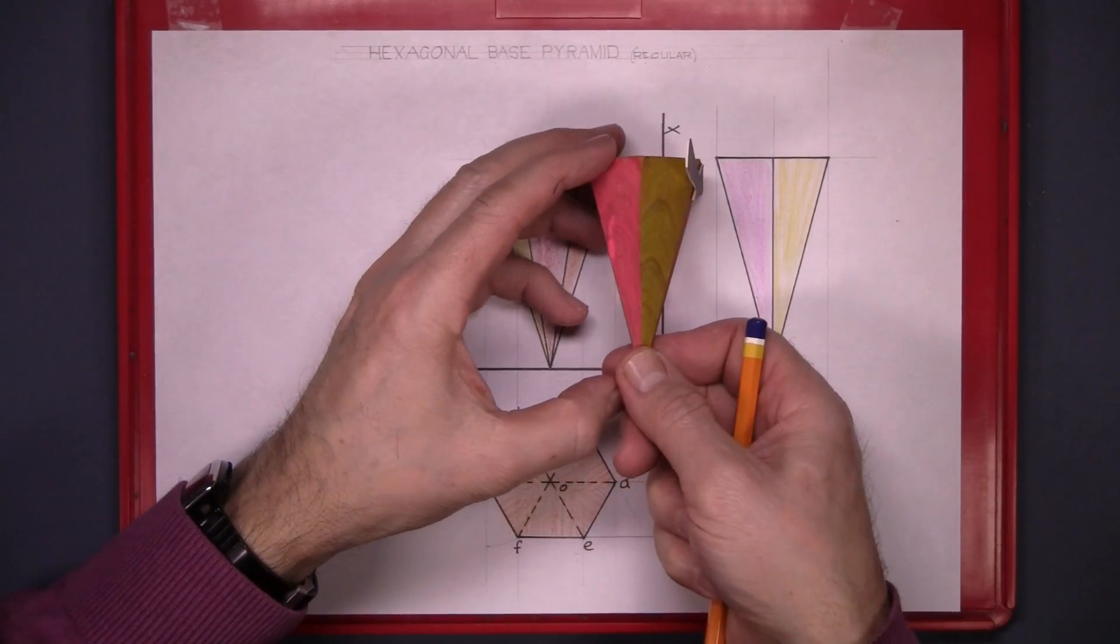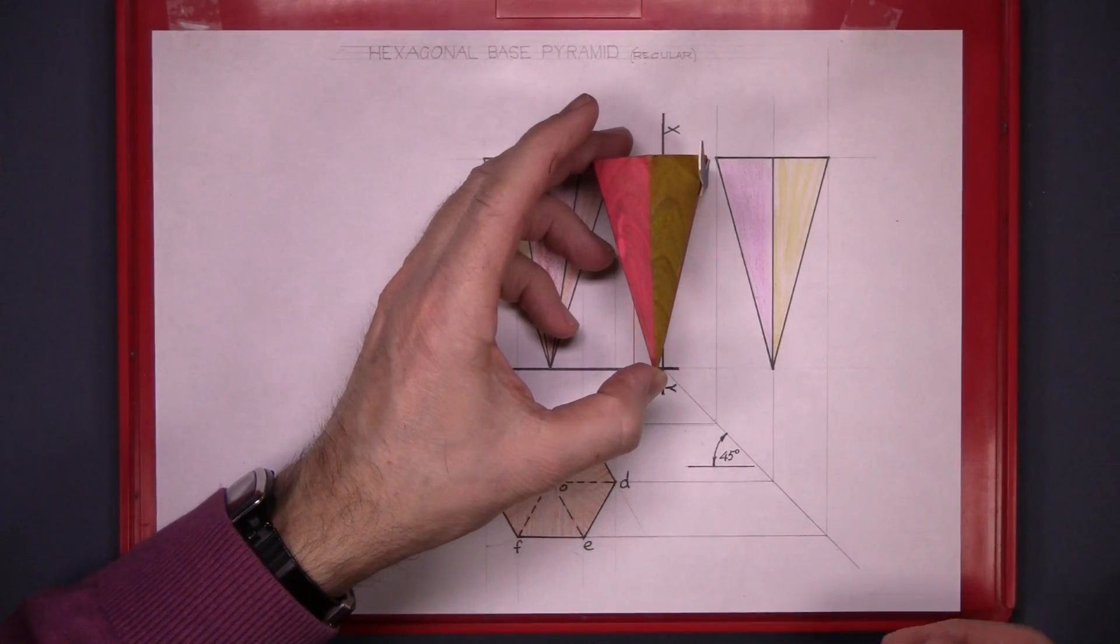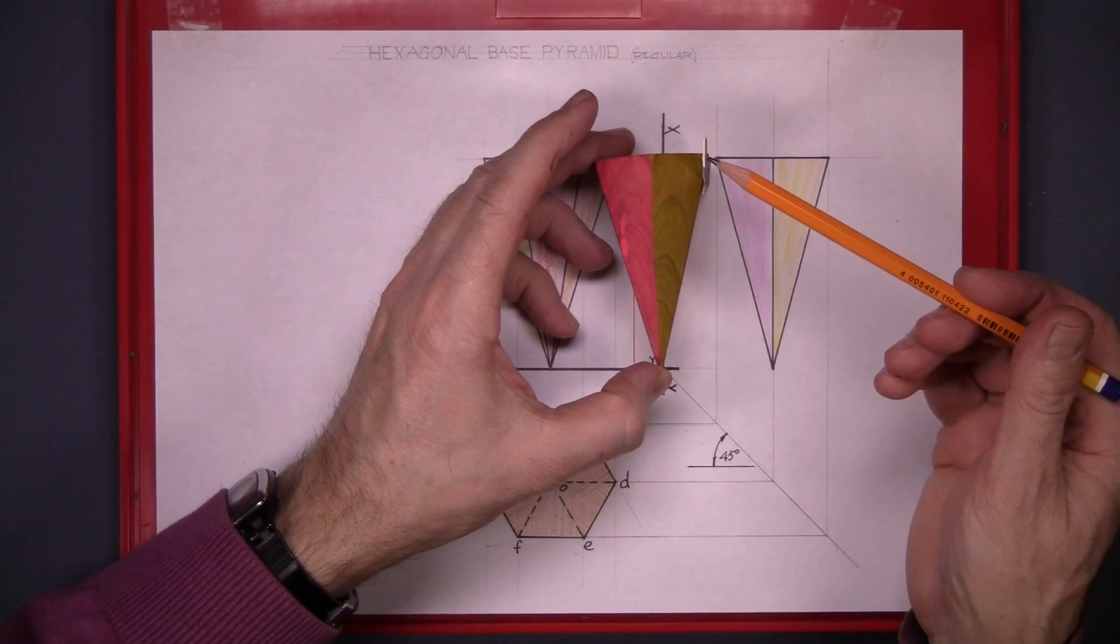And that's what it looks like there. You have the pink surface and the yellow surface.